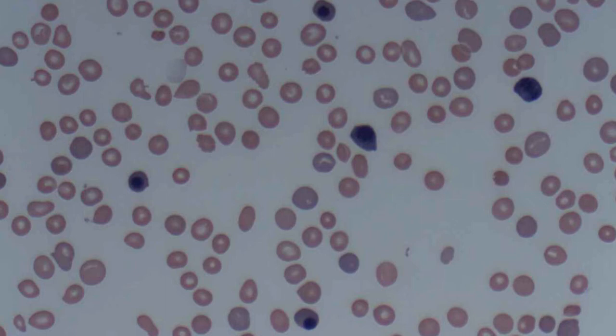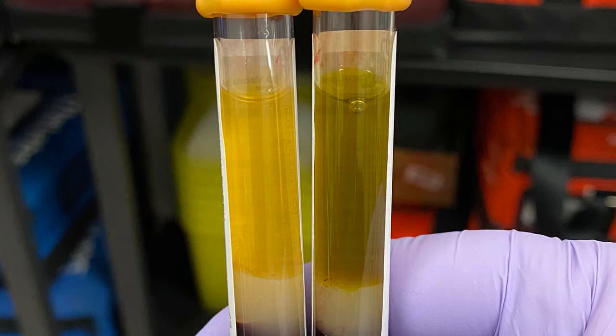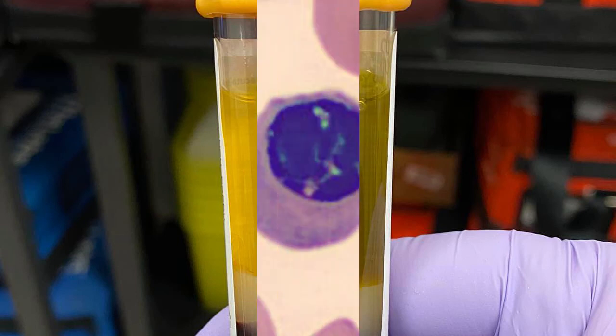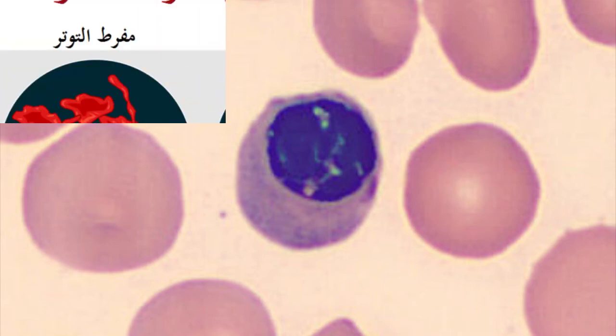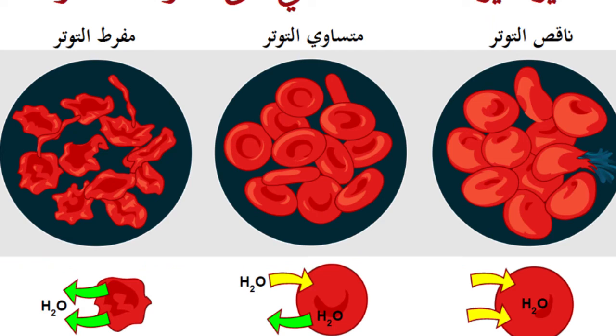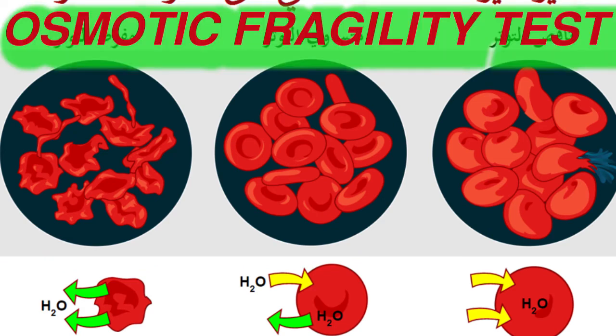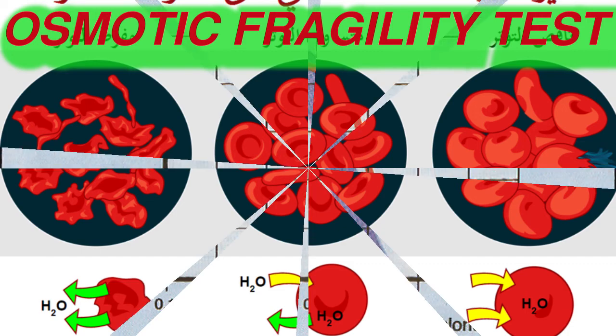Bilirubin: after hemolysis, the heme group in hemoglobin is converted into unconjugated bilirubin. A rise in total bilirubin and unconjugated bilirubin indicates hemolytic anemia. LDH (lactate dehydrogenase) is present in all tissues including RBCs, so elevations are consistent with hemolysis. Osmotic fragility test calculates the proportion of hemolysis when RBCs are placed in a hypotonic solution.